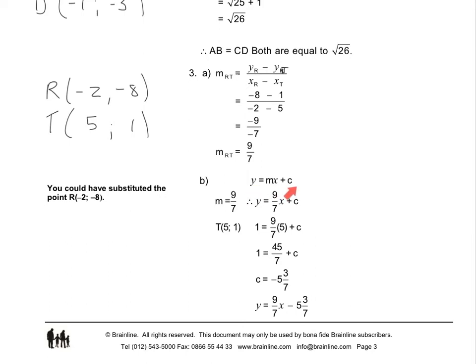We can also work out the equation of the line using the standard form y equals mx plus c, where m is substituted with 9 over 7. Using the coordinate T where x is 5 and y is 1, we substitute x with 5 and y with 1 to solve c. Simplifying gives c equal to minus 5 and 3 over 7, and therefore the equation is y equals 9 over 7x minus 5 and 3 over 7.